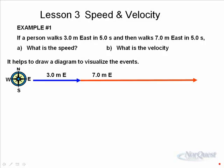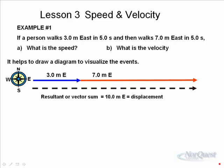And the resultant of these two vectors is, as you can see, three plus seven is ten meters. So the total distance is ten meters.